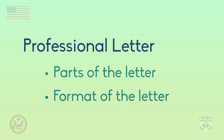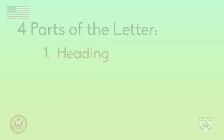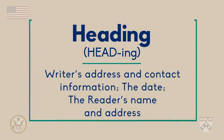In the United States, professional writing follows a standard format or order and includes four parts. The first part is the heading, which includes the writer's address and contact information, the date, and the reader's name and address.